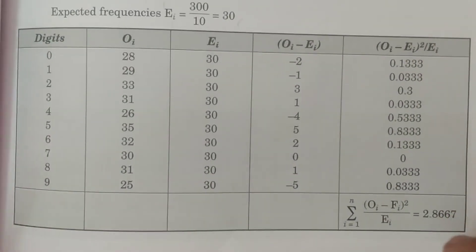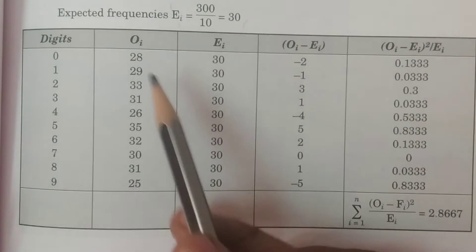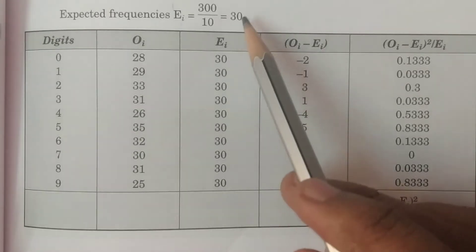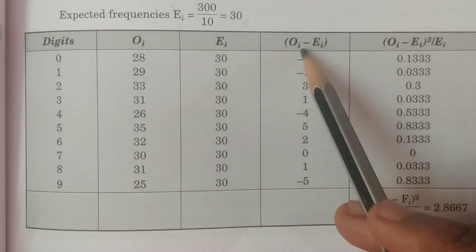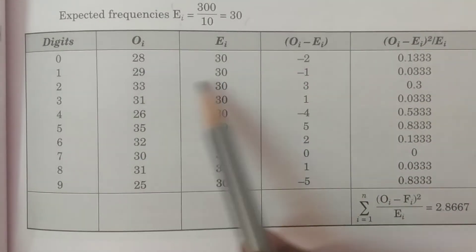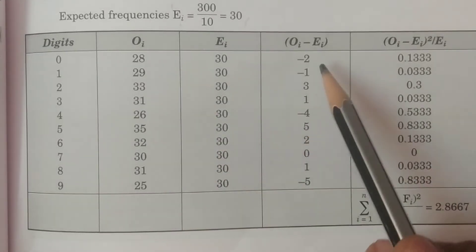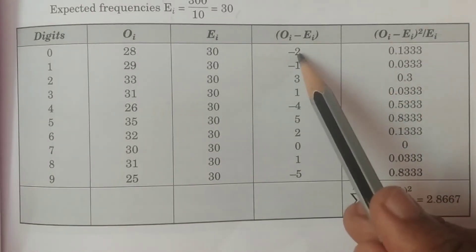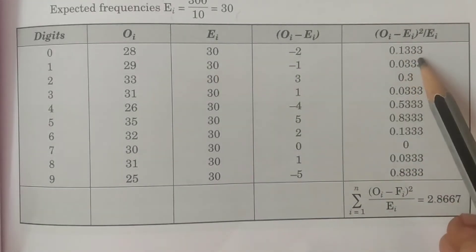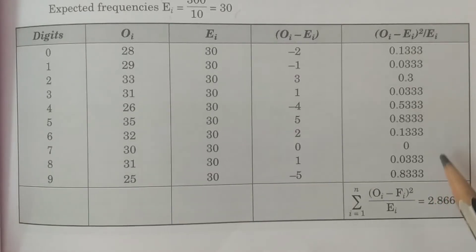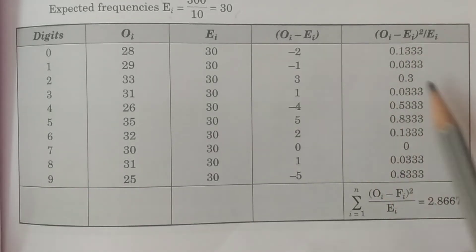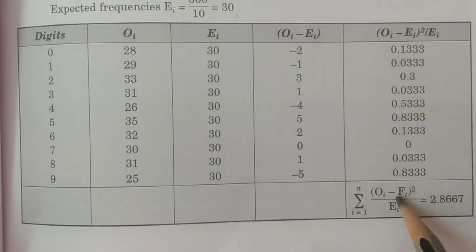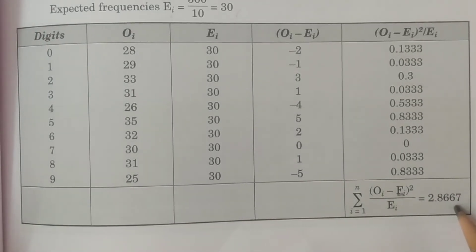Now form a table with columns OI (the given observed frequencies), EI (expected frequencies, all 30), and then calculate OI minus EI: for example, 28 minus 30, 29 minus 30, and so on for all values. Then calculate (OI minus EI) squared divided by EI — for example, (−2) squared divided by 30 equals 0.133, and so on for all values. The total summation of (OI minus EI) squared divided by EI equals 2.867.